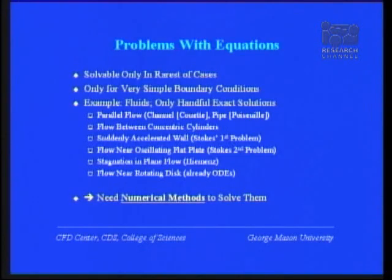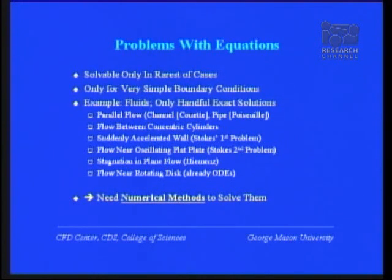Now there are problems with this. These equations are solvable only in the rarest of cases — only for very simple boundary conditions. If you look at fluids, there are only six known exact solutions for very trivial flows. Anything involving complex geometry — flow in an artery, flow past a car or airplane — is not solvable in an exact way.